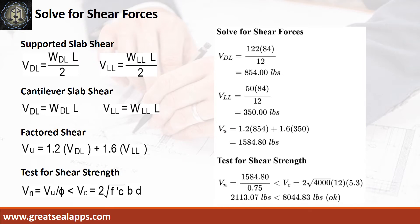The shear force for dead load is 854 pounds, and the shear force for live load is 350 pounds, for a maximum shear force of 1,584.8 pounds. The nominal shear force is 2,113.07 pounds, which is less than 8,044.83 pounds.